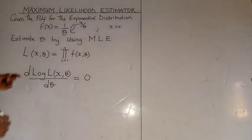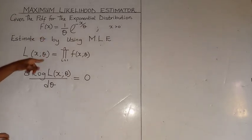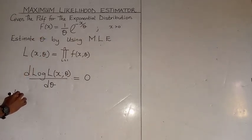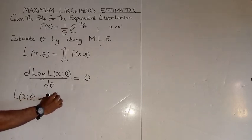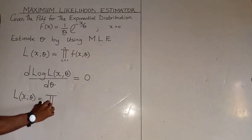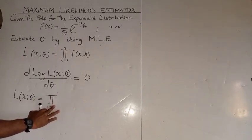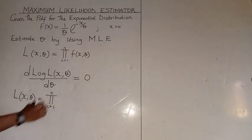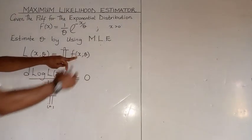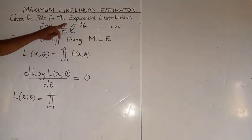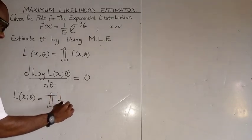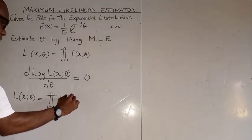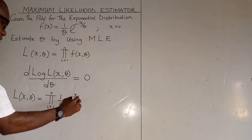So, what do we do next? We bring down the likelihood function. Instead of putting this, we put the exponential distribution, which is 1 over theta, times exponential of minus x over theta.